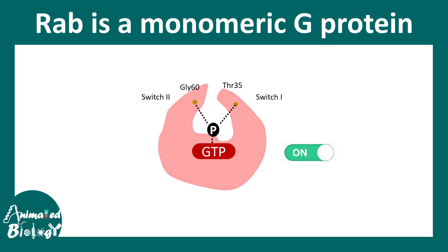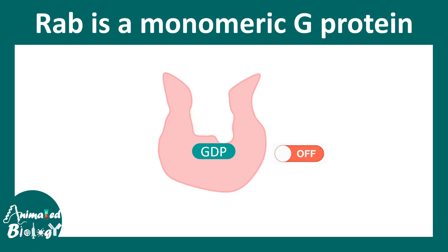Here we can see an empirical structure of the RAB-GTP complex, where the phosphate group is held tight through interactions with two particular residues — glycine-60 and threonine-35 — between the switch 1 and switch 2 helix. When there is hydrolysis of GTP, the switch 1 and switch 2 helices swing away from each other, and this is how the conformation changes.